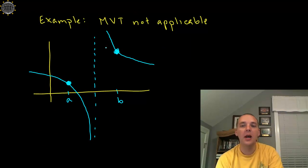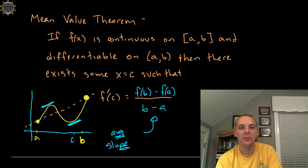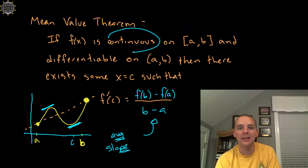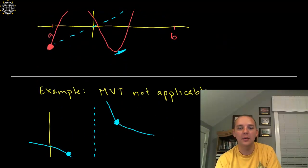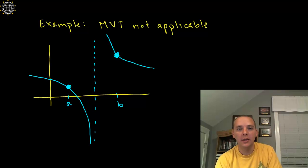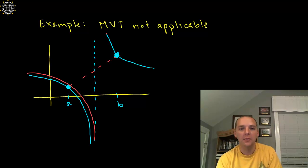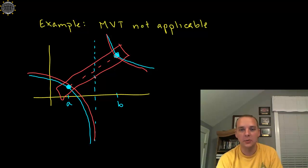Here's an example where the mean value theorem would not be applicable. Here's a, here's b, but what criteria has been violated? There's only two. Well, it's not continuous. If you look between a and b, there's an asymptote, and sure enough that keeps us from being guaranteed a place whose slope matches this average slope here. And sure enough, you see everywhere here the slope is negative, everywhere here the slope is negative, yet the average slope between them is positive. So if it was continuous, we would have a place that would agree with this average slope, but as it stands, we do not.